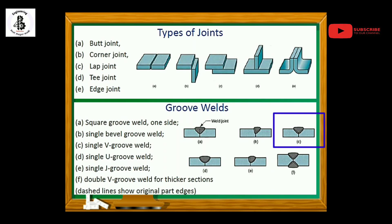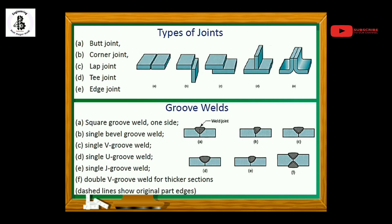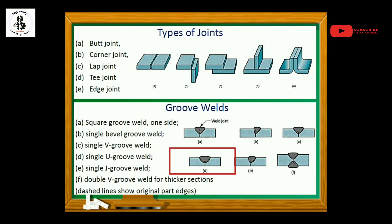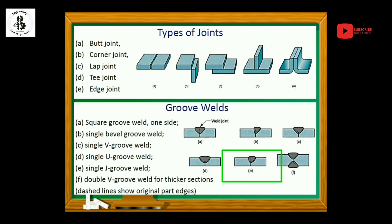Similarly, if you want to make a joint with surface preparation on both base metals making a U shape, that is known as a single U groove weld. Then if you make surface preparation on only a single plate and it looks like a J shape — as shown in figure E — that is a single J groove weld.